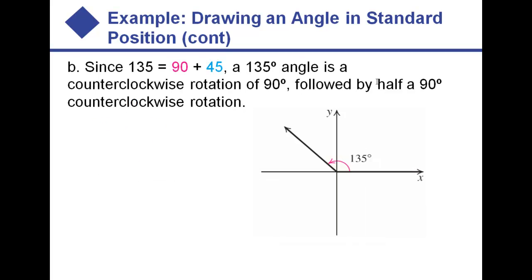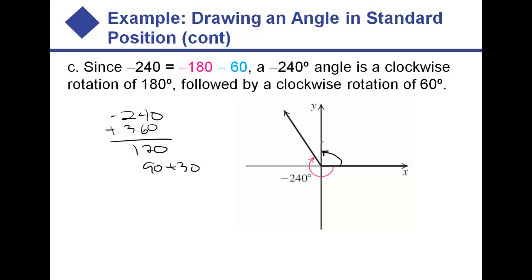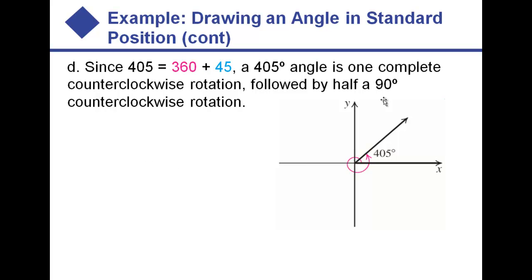135 is 90 plus 45, so we go to 90 and then the 45 is halfway in between. Negative 240 goes around this way — since negative 240 is 180 plus 60, we know that piece is 60, about two-thirds of the way up. You could also think of it as negative 240 plus 360 equals 120, which is 90 plus 30, same result. Since 405 is 360 plus 45, we just went all the way around and then 45 degrees.